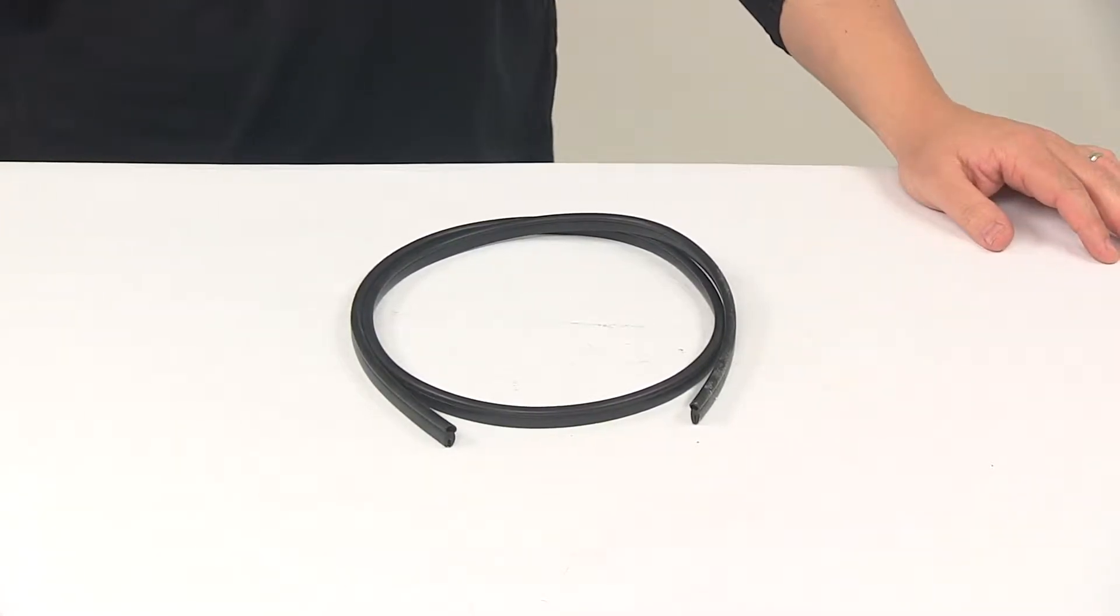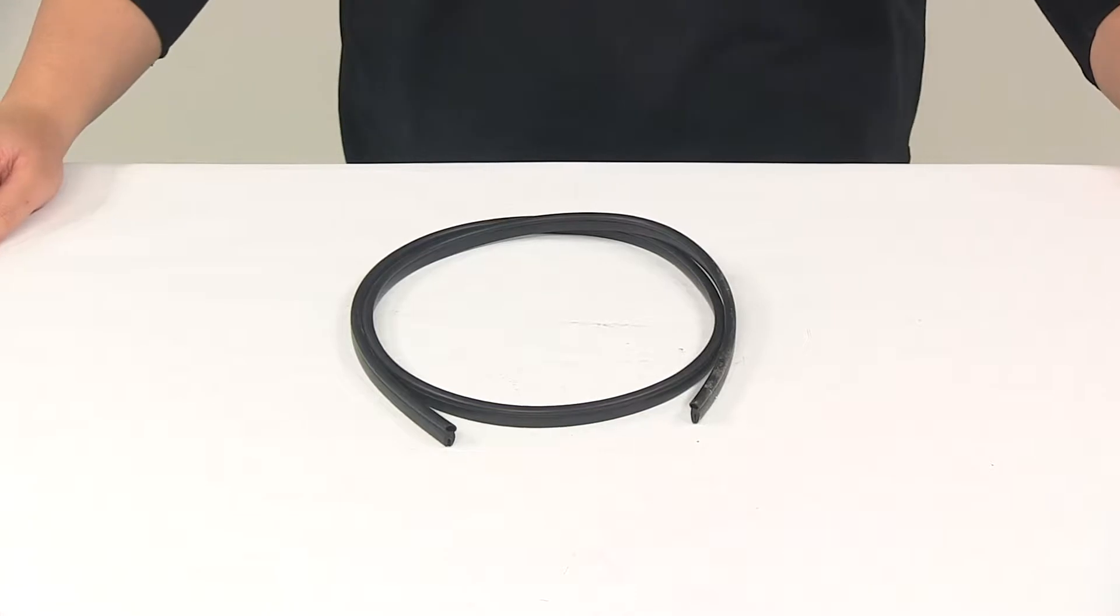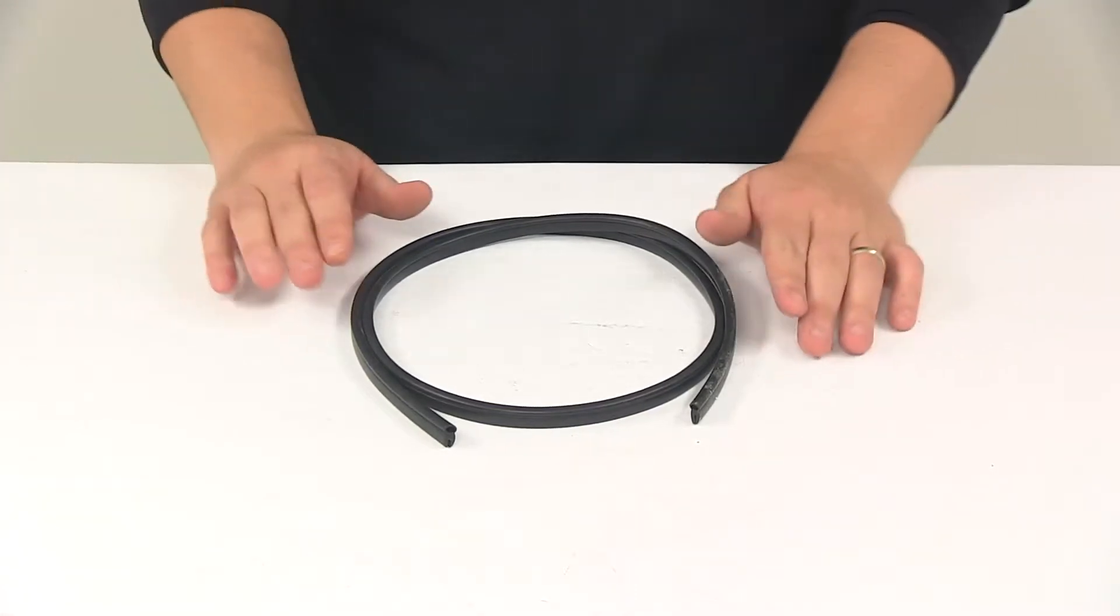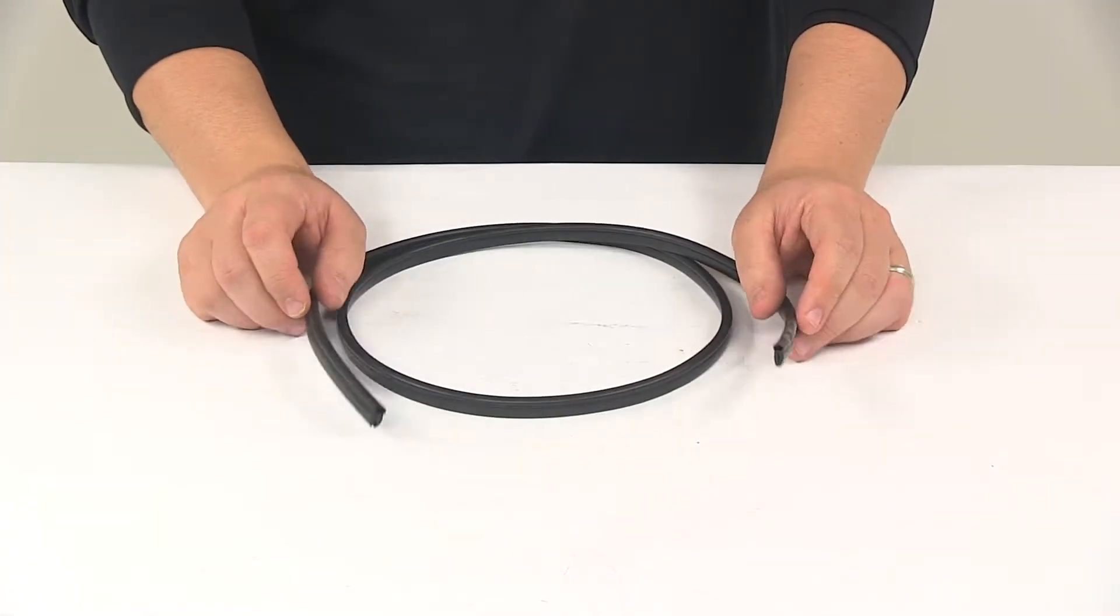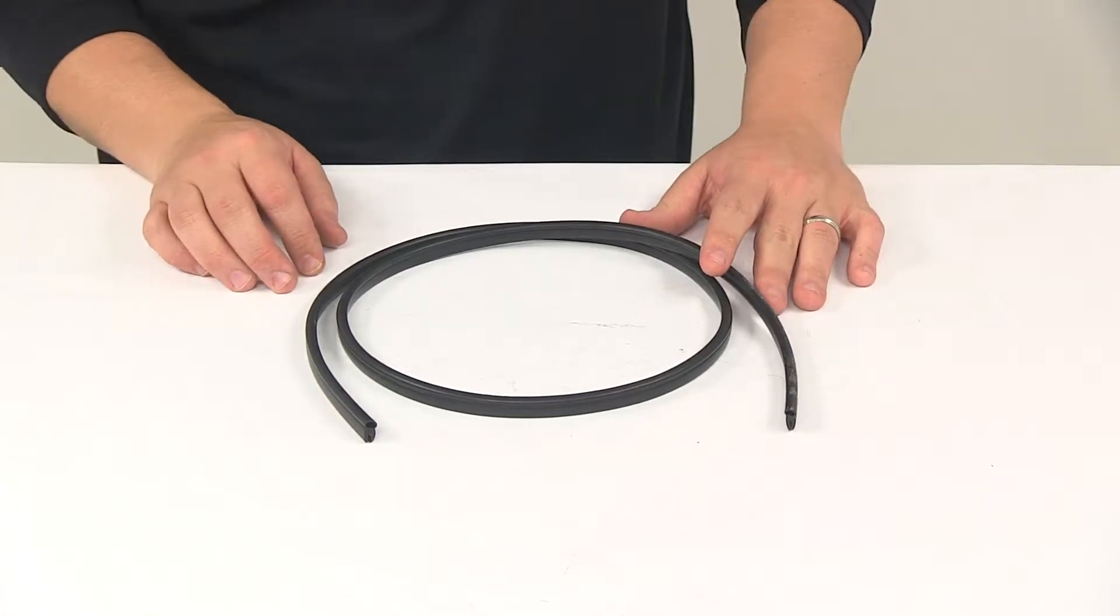Today we're going to be taking a look at the replacement weather seal for Ventline EZ-Lift Vented Dome Trailer Roof Vents. This unit replaces a worn, damaged, or leaking weather seal.